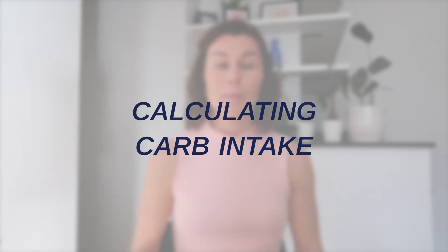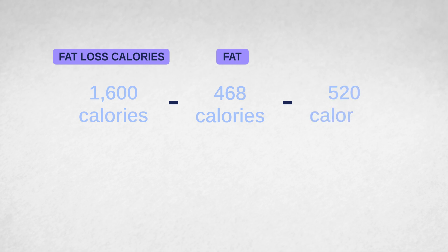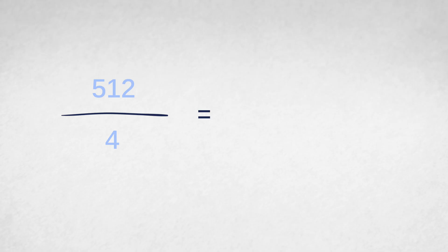For the last step, we figure out your carb intake. Take your fat loss calorie target of 1,600 calories, subtract your calories from fat (468) and your calories from protein (520). After subtracting fat and protein, you're left with 512 calories. Divide 512 by 4 to get your grams of carbs per day. Now that you know your fat loss calories and your macros — carbs, protein, and fat — you follow along with these targets and make adjustments as necessary.